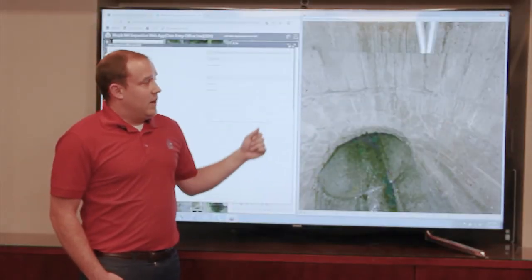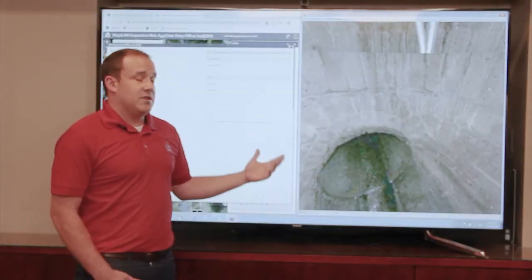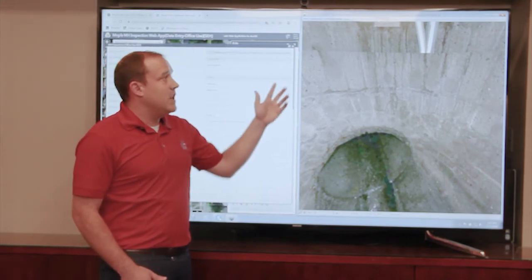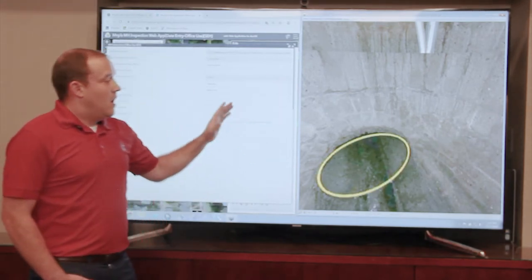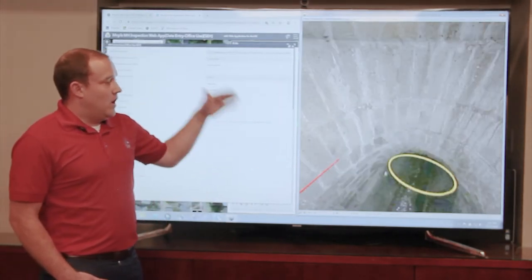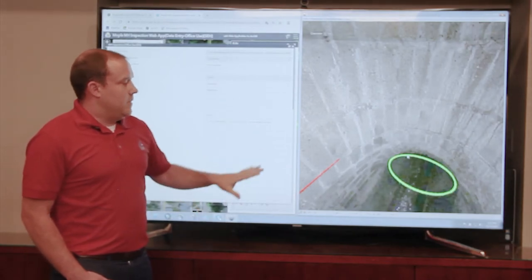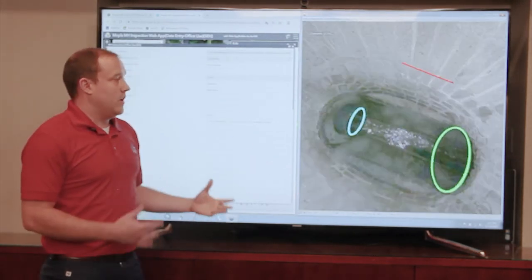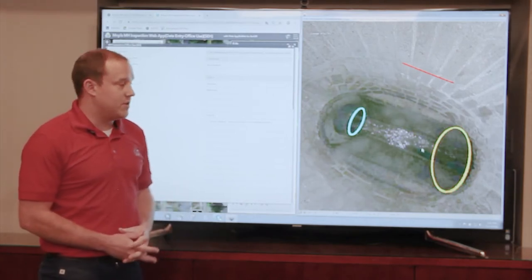This is just the raw viewer. Within it we can integrate several additional features such as measurements. We're going to turn on the 3D objects, and that allows us to see our pipe sizes as well as some of our other indicators throughout the structure that help us code and identify different components of the structure.